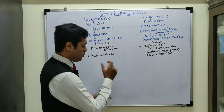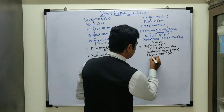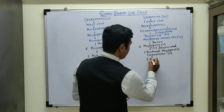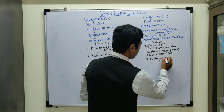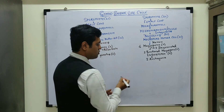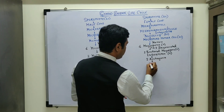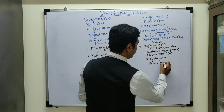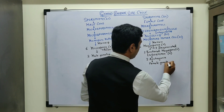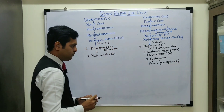Inside this functional megaspore or endosperm there is development of two archegonia. So these are the two sex organs — two archegonial cells are produced. Inside the archegonia there is development of the female gamete, that is the ovum. So the female gamete or ovum is produced, which is haploid.